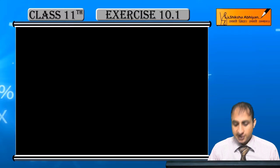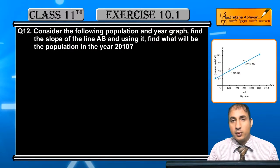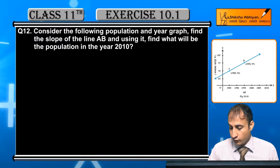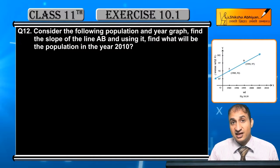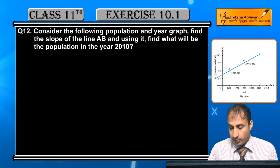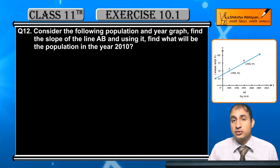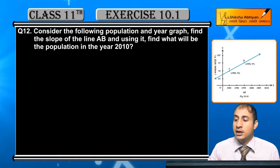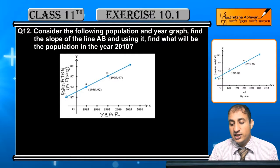Question 12, the last question of the exercise. Consider the following population and year graph. Find the slope of the line AB using the graph, then find what will be the population in the year 2010. You need to determine the population in 2010.